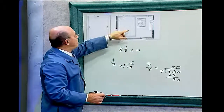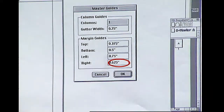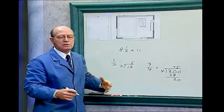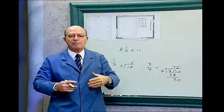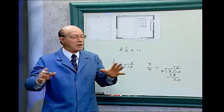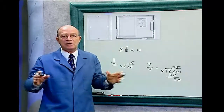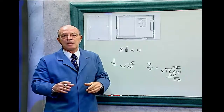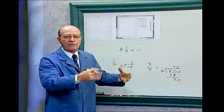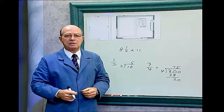We know that 5/8 is 0.625, and we know the top 3/8 is 0.375. So you can see it's important to know your fractions — these are common fractions, and you should really memorize them. Whenever you're working, not only on a computer but on many machines, you will not be able to put fractions into the machine. You have to convert them into a decimal.